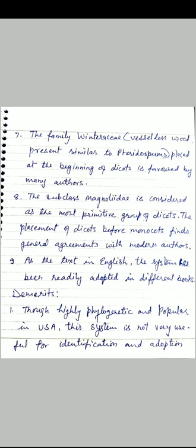The family Winteraceae, which has vessel-less wood similar to pteridosperms, is placed at the beginning of dicots, which is favoured by many authors. The subclass Magnoliidae is considered as the most primitive group of dicots. The placement of dicots before monocots finds general agreement with modern authors. This system has been readily adopted in different books.